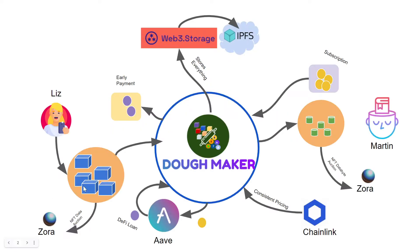So how does it work? The story is very simple. We have Liz. Liz is a really cool TikToker. She has lots of information and lots of great content that she generates, creates, and curates. But she doesn't know what to do with it because it's so much. Enter DohMaker.